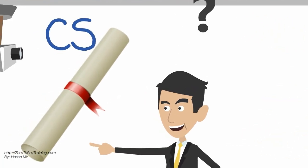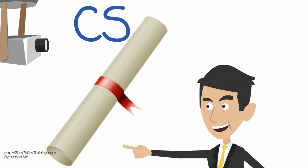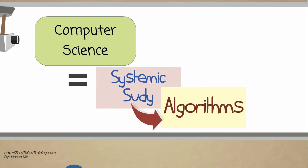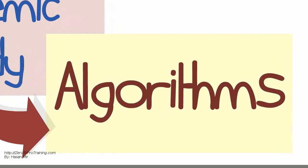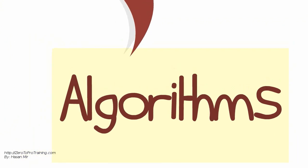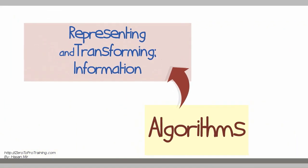In this video we will focus on computer science. Computer science is the systematic study of algorithmic methods. The algorithmic methods are used in representing and transforming information.